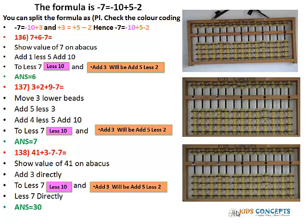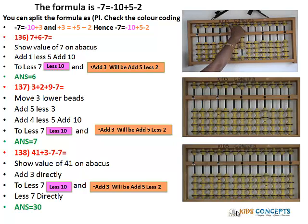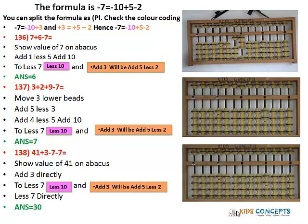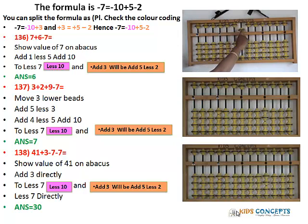Let's start with the first problem: 7 plus 6 minus 7. So less 7, then add 6 to it. Can you add 6 directly? You cannot. So add 1 less 5 add 10. Now you have to subtract 7 from this. You cannot do less 7 directly, so less 10 add 5 less 2. The answer is 6.